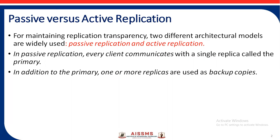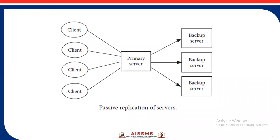In passive replication, every client communicates with a single replica called the primary copy, and in addition to the primary, one or more replicas are used as the backup copy. In this figure you can see the passive replication of servers, where there are a set of clients, a set of backup servers, and the primary server transfers the request from the client to the backup server.